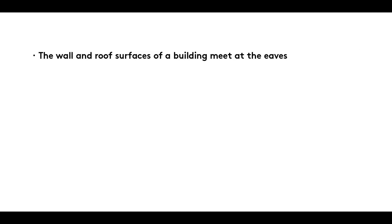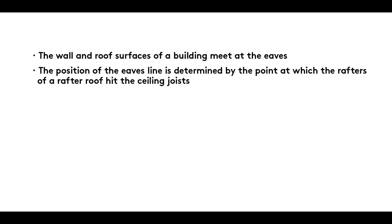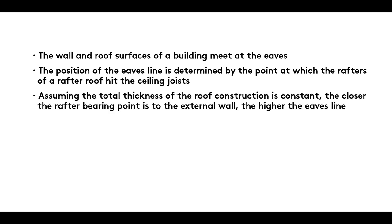Summary: The wall and roof surfaces of a building meet at the eaves. The position of the eaves line is determined by the point at which the rafters of a rafter roof hit the ceiling joists. Assuming the total thickness of the roof construction is constant, the closer the rafter bearing point is to the external wall, the higher the eaves line.